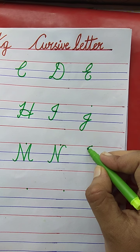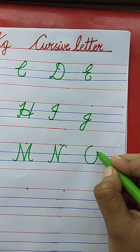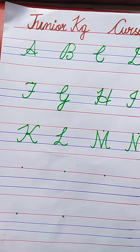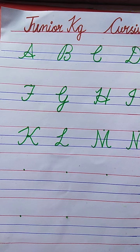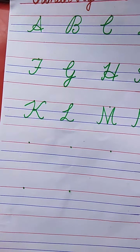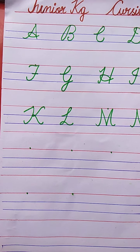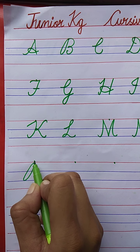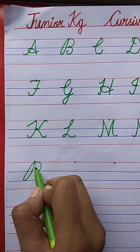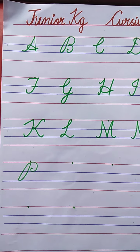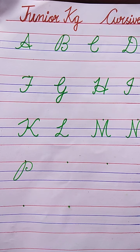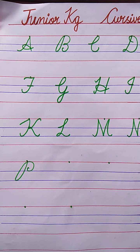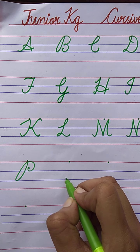O. O for Owl. The spelling of Owl: O-W-L. Very good. Now tell me the next letter — what comes after O for Owl? P. P for Peacock. Slanting line, one more slanting line, curl, semi-circle. P for Peacock. The spelling of Peacock: P-E-A-C-O-C-K.